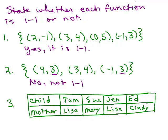This is the 'who's the mother' function. You have the name of a child and the name of their mother: Tom's mom is Lisa, Sue's mom is Mary, Jen's mom is Lisa, and Ed's mom is Cindy. Is this one-to-one? No, because Tom and Jen both have Lisa for their mother, so it's not one-to-one.